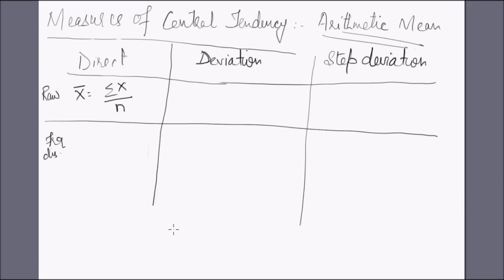Hello and welcome to Edupedia World. We are continuing with measures of central tendency. We had started with arithmetic mean, and in the last two sessions we covered the direct method and the deviation method. Today we will take up the step deviation method. To recall, under the direct method with raw data, the formula is summation of x over the number of variables.